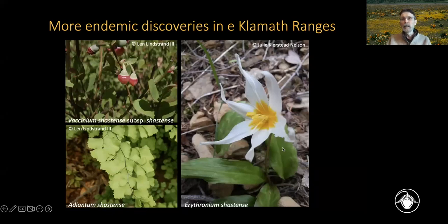These discoveries include the Shasta huckleberry, Shasta maidenhair fern, and Shasta fawn lily — plants in different major lineages of the vascular plants, some of which are very showy, but had gone underappreciated or overlooked.